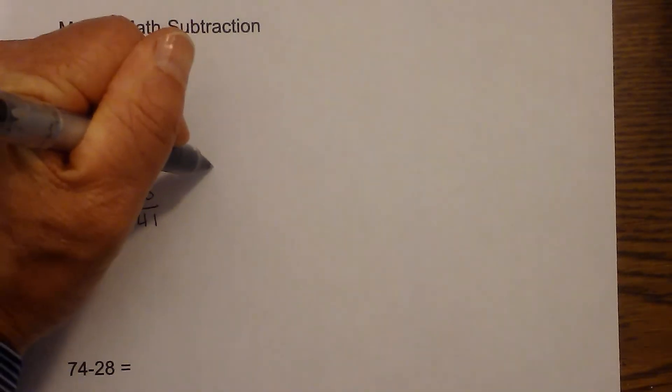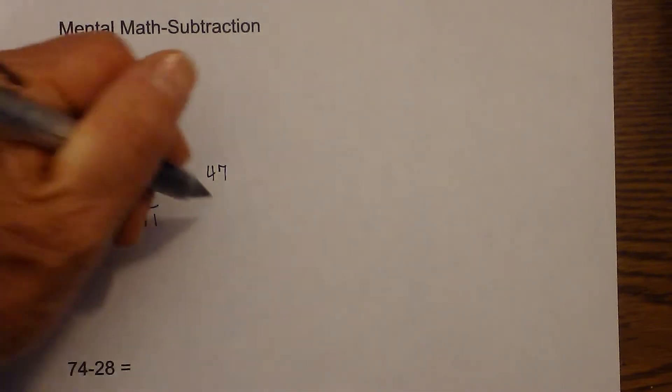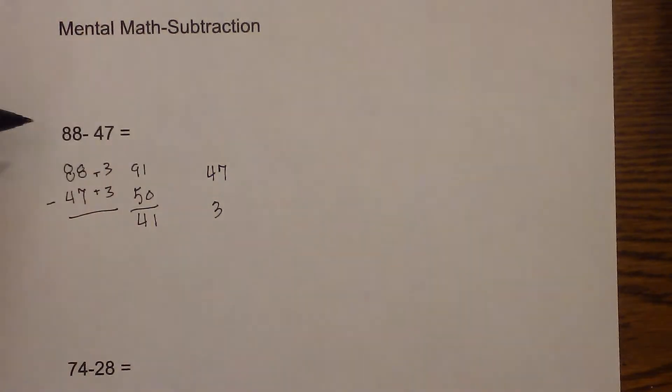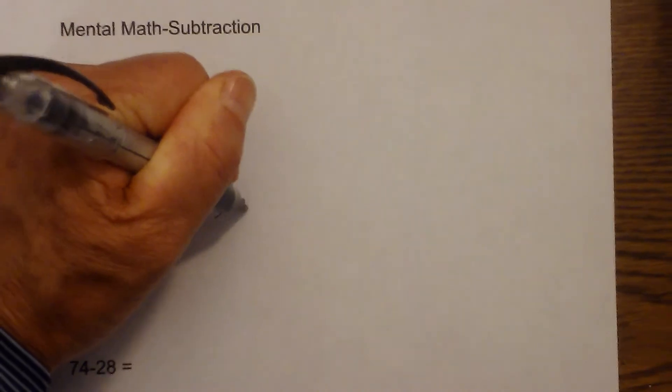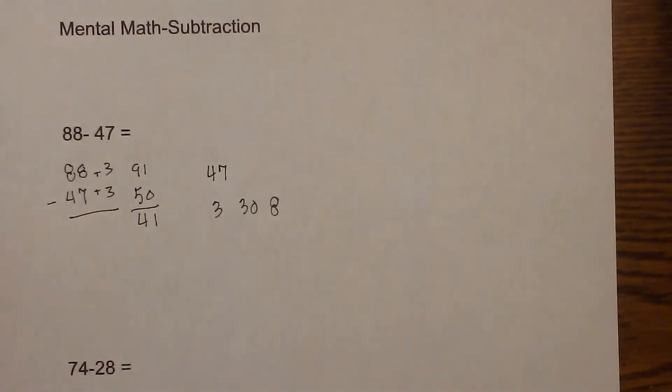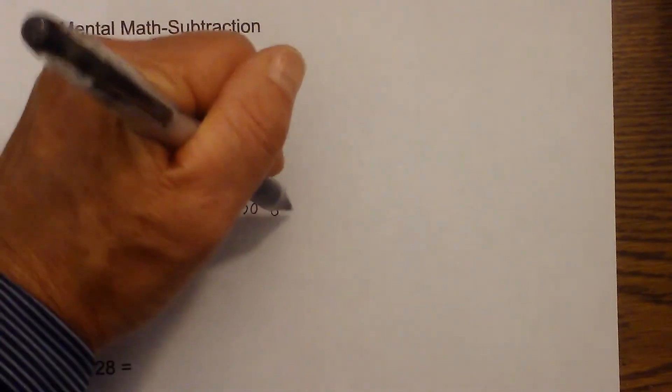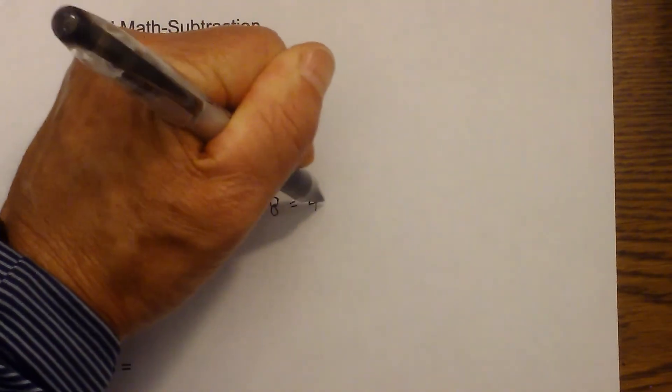Or you can do this. You can think what do I need to add to 47 so that it equals 88. It is kind of like counting change back. So I know if I add 3 that gets me to 50 and then add 30 that gets me to 80 and then 8 that gets me to 88. And then I just add 3 plus 8 is 11 plus 30 is 41.